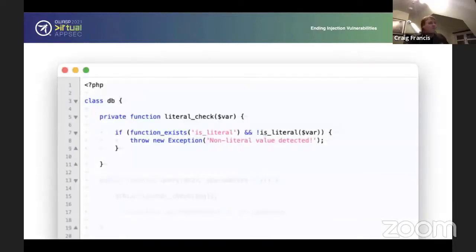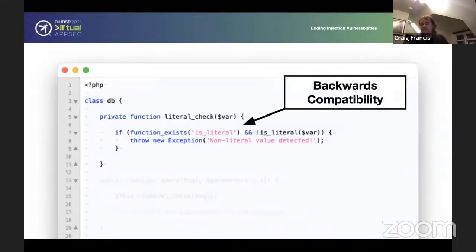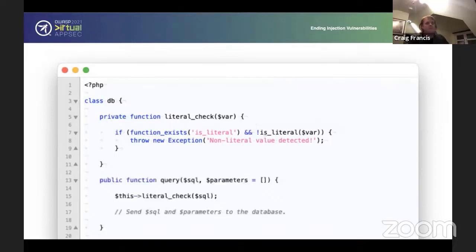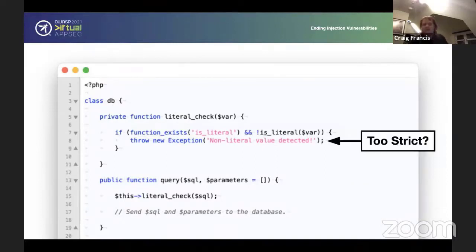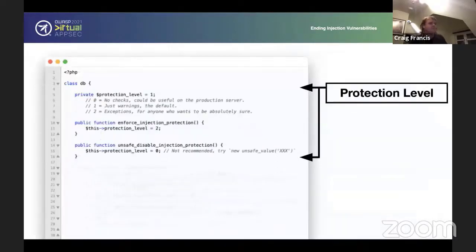So how would it work? That's it really on screen. First of all, you do a function exists because we need to look for backwards compatibility. If it doesn't exist yet, don't use it. And if the variable is not a literal, then you can throw an exception. And in this case, I'm trying to do it as a library. So the library might define this as a private function that it can use every time it needs to check this. And that's it. Basically, when the query method is called, it just checks that SQL is literal. But you might think that's a bit too strict. And that's fair enough.